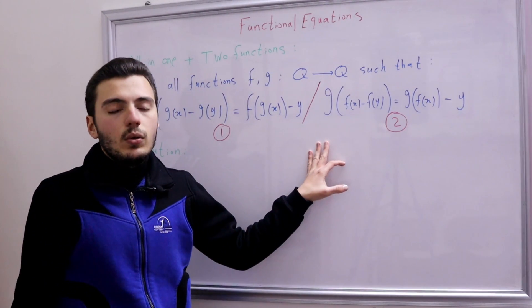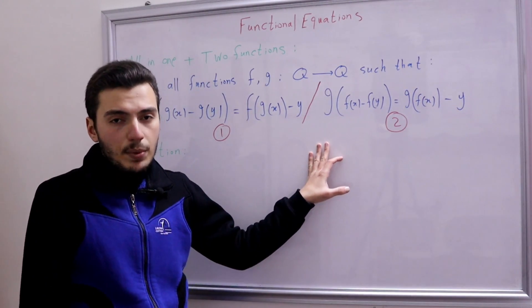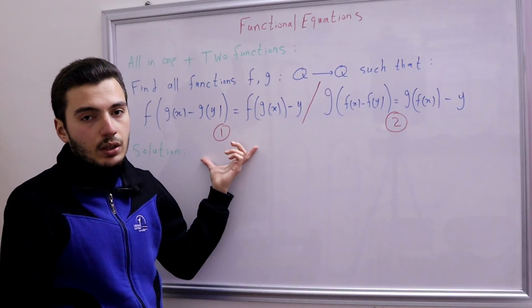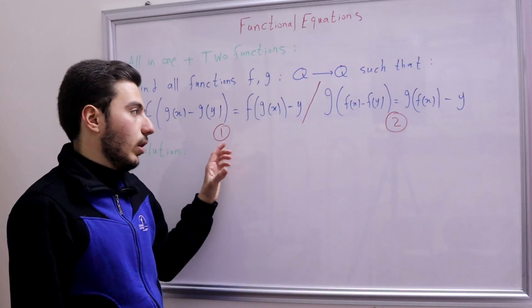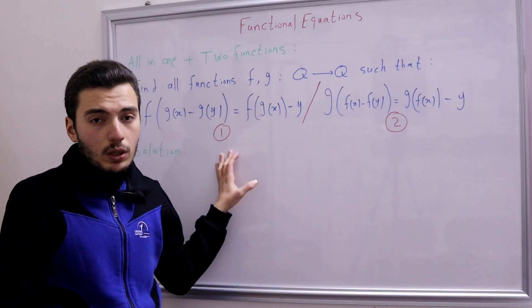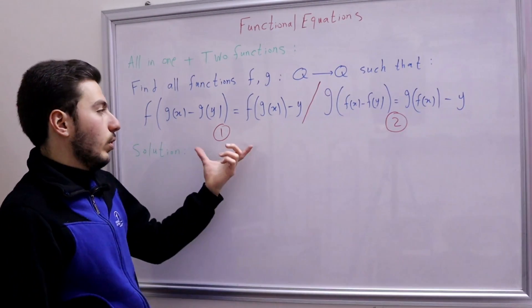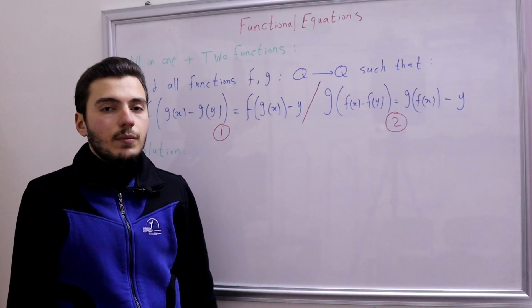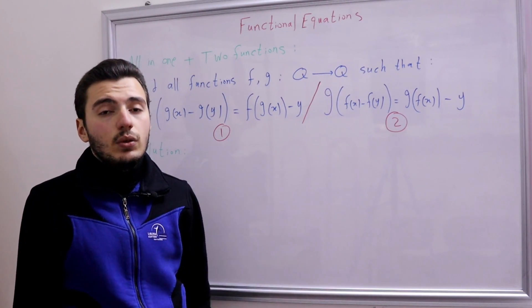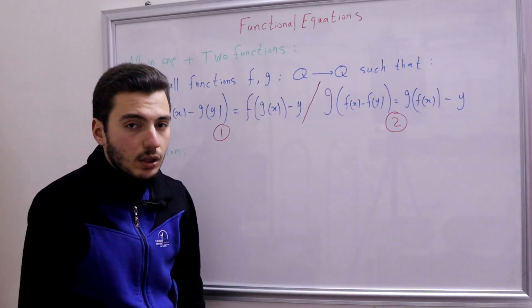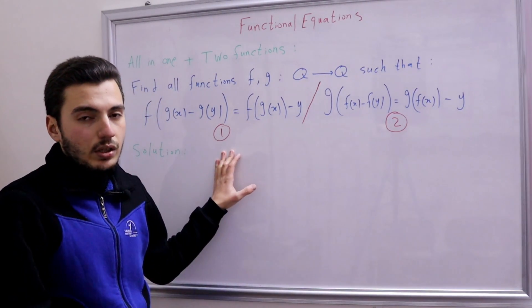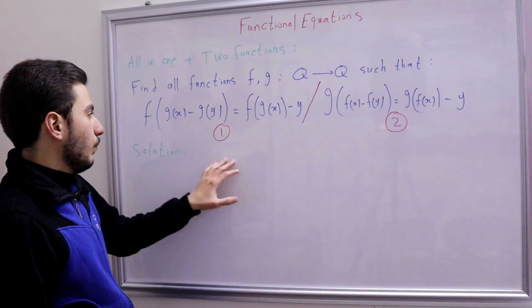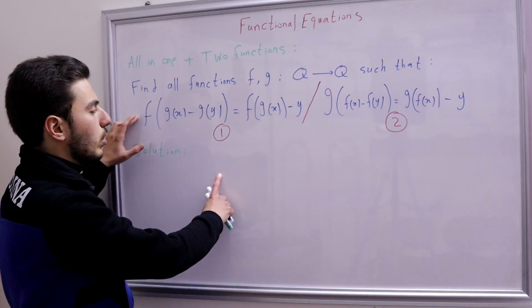We're going to denote P(x,y) for this assertion. So whenever I say, for example, P(1,1), that means we're substituting x=1 and y=1 into the first functional equation. Now let's actually take a closer look at the first equation.